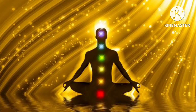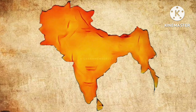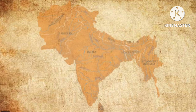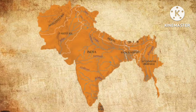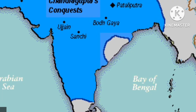The term Akhand Bharata can be translated as undivided India, which includes present-day India, Pakistan, Bangladesh and parts of Afghanistan, Nepal, Bhutan and Myanmar that were historically part of the Indian subcontinent.